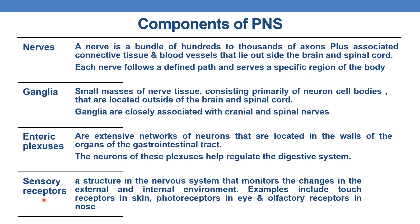The next component is sensory receptors. They are structures in the nervous system that monitor changes in the external and internal environment. Examples of sensory receptors include touch receptors in the skin, photoreceptors in the eye, and olfactory receptors in the nose.